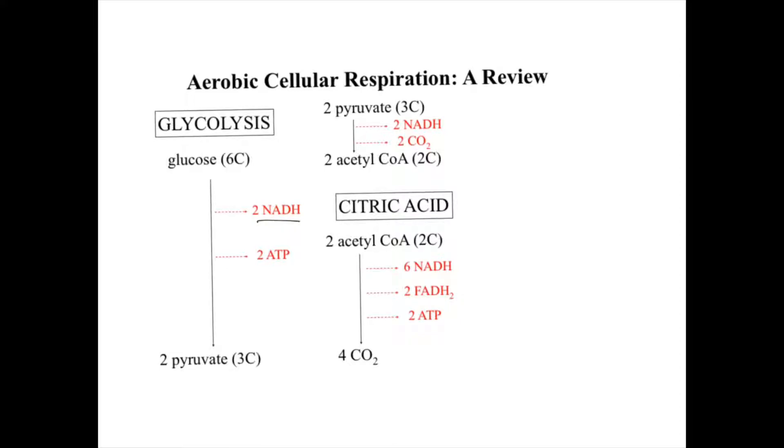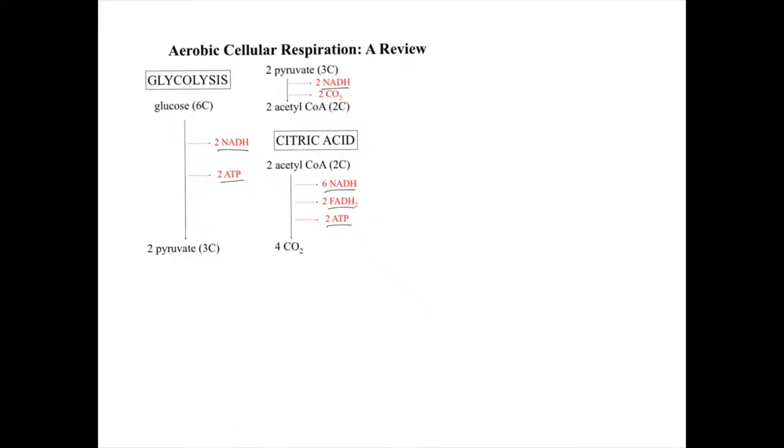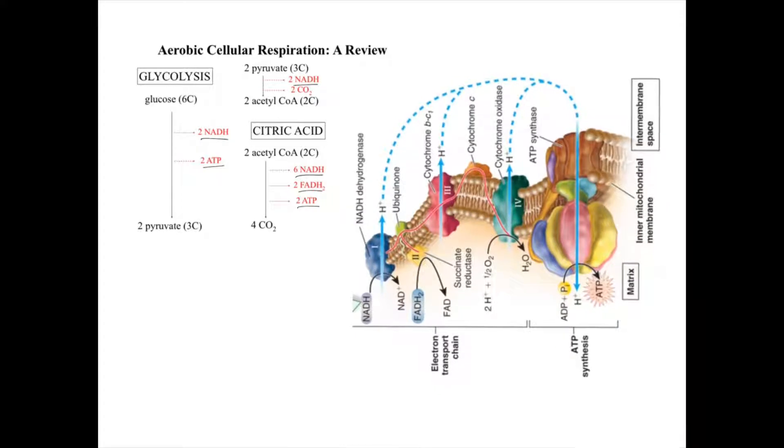If we take this now and bring in our electron transport chain, we are reminded how these high energy electron transporters such as NADH and FADH2 are used to ultimately make ATP. NADH drops off its electrons at complex number one and FADH2 drops off its electrons at complex number two.